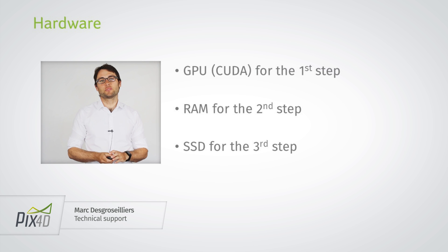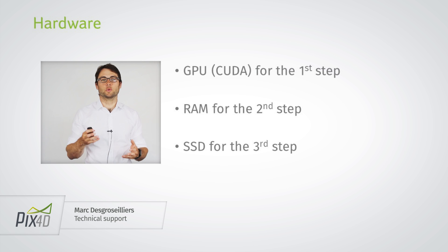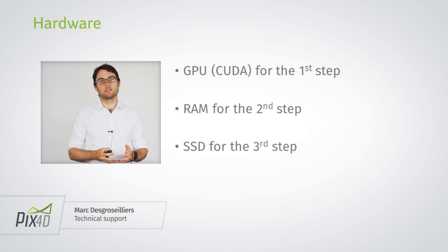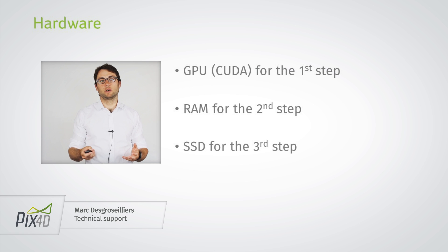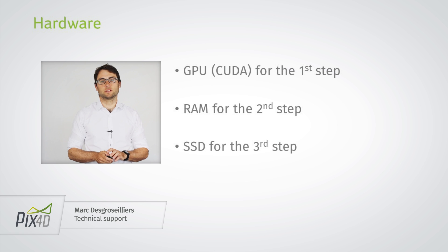In terms of hardware, I want to give a few recommendations. For the first step, it's going to be mostly the CPU that's going to make a difference. In the case where you have large projects, say a few thousand images, then having a good CUDA-enabled GPU is also going to reduce the processing time significantly.